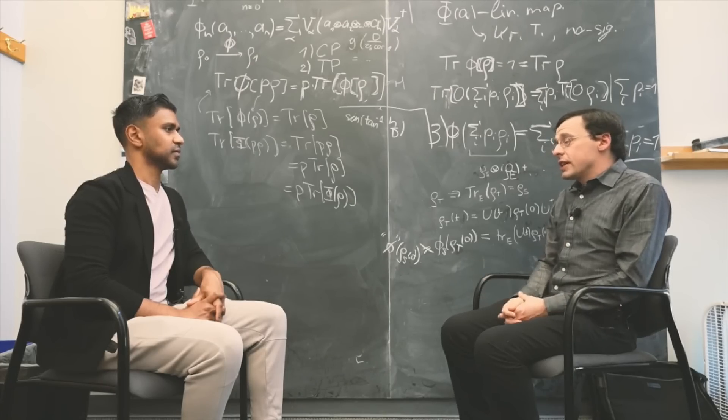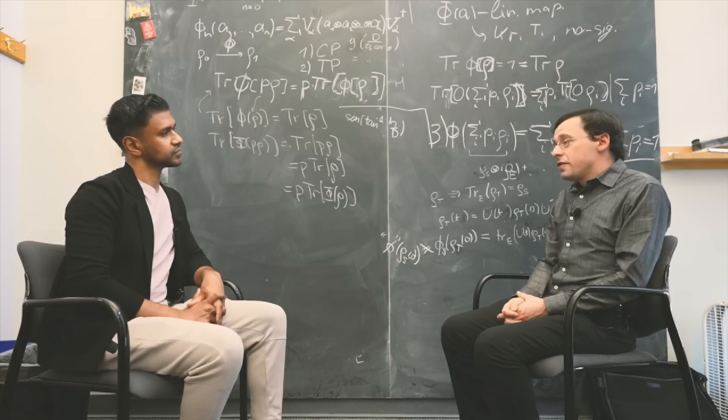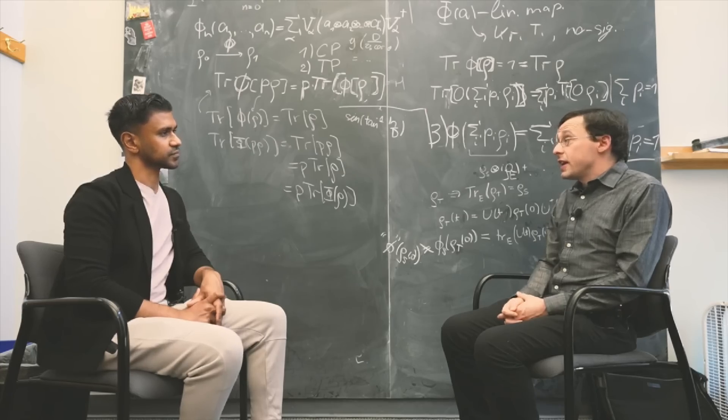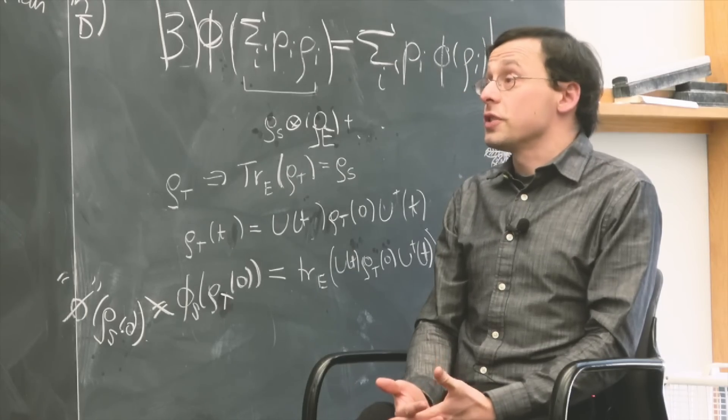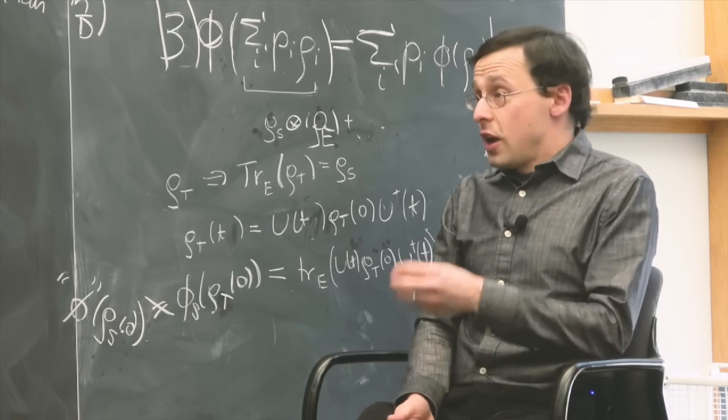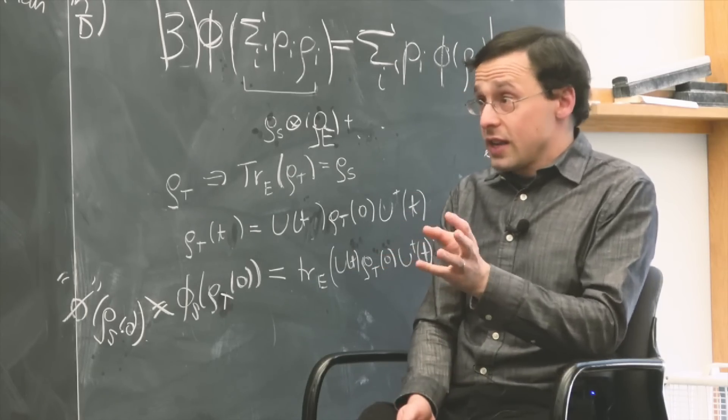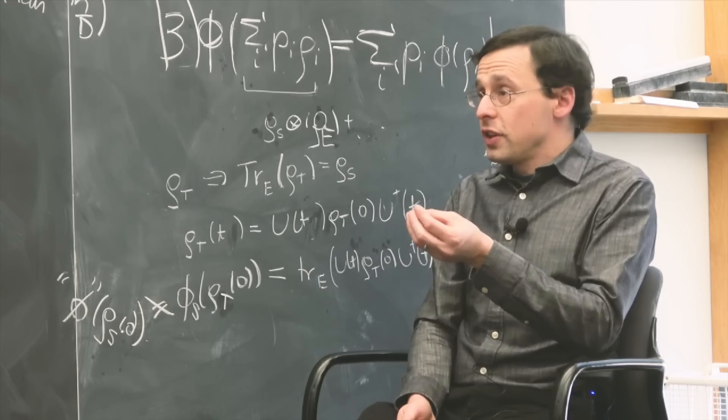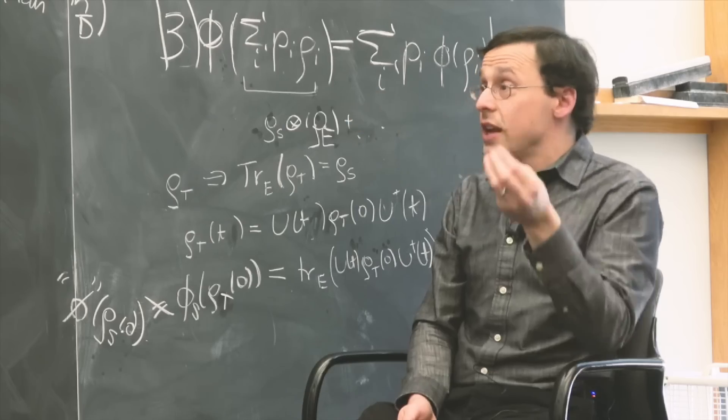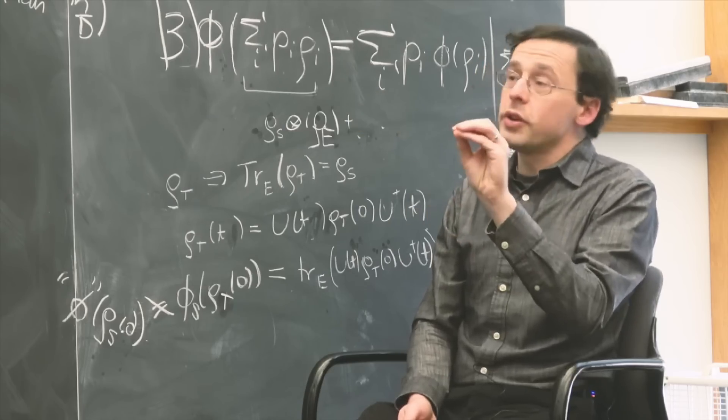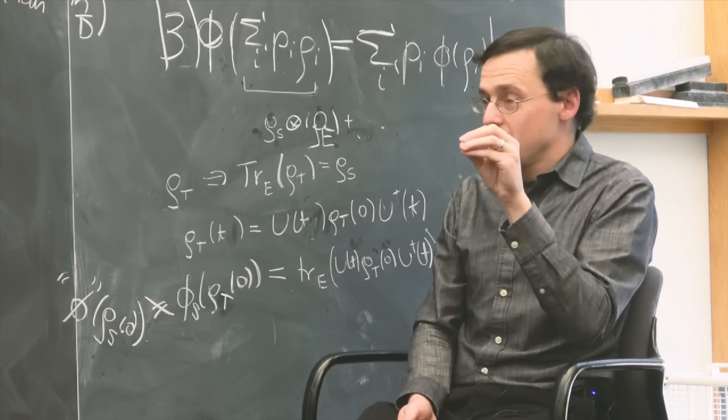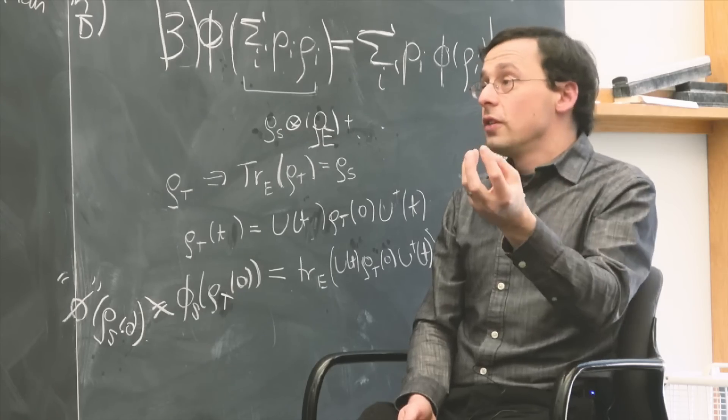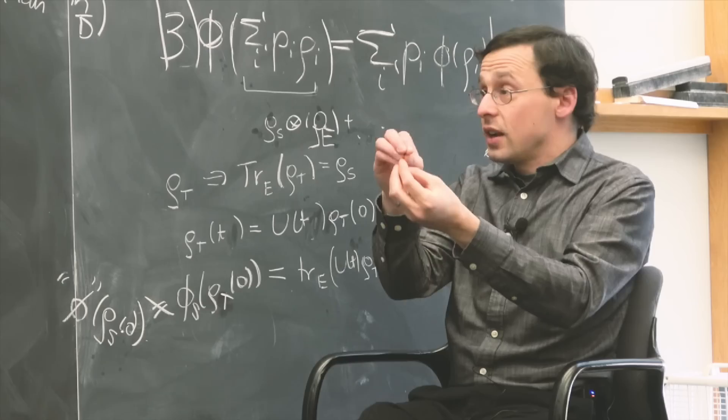In the textbook theory, a wave function is the assignment of a complex number to every possible configuration of your system. If you're talking about a single particle, nothing else, then every possible configuration is every possible location the particle can be in. Each location is labeled by three numbers—X, Y, and Z coordinates.